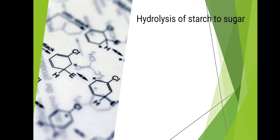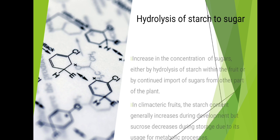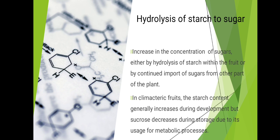Hydrolysis of starch to sugar involves an increase in the concentration of sugars, either by hydrolysis of starch within the fruit or by continued import of sugars from other parts of the plant. In climacteric fruits, the starch content generally increases during development but decreases during storage due to its usage in metabolic processes.